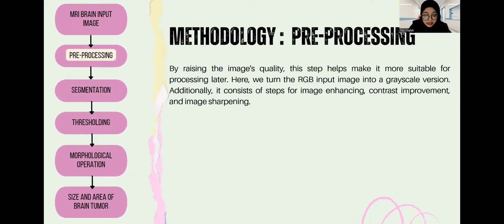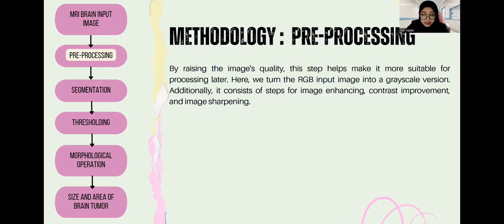Next we have pre-processing. In this step we are raising the image quality, which is most suitable for further processing. Here we convert the RGB input image into a greyscale version. Additionally, it consists of steps for image enhancement, contrast improvement, and image sharpening.